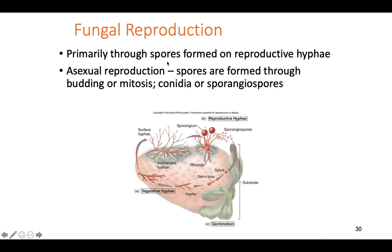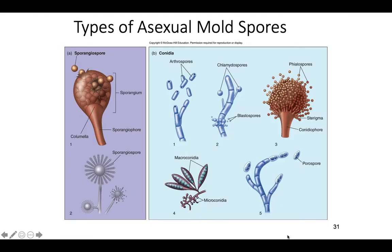Fungal reproduction is mostly through spores formed on reproductive hyphae. It's asexual reproduction where spores form through budding or mitosis. Different types of fungal classifications have different types of spores, and those different types of reproduction give them their different classification names. You can see here different types and shapes of mold spores that fungi use to reproduce.